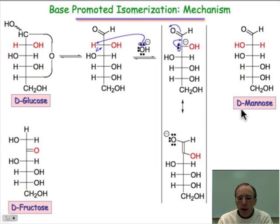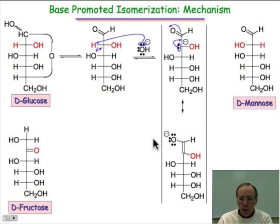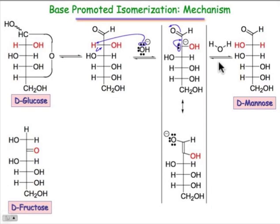What happens in forming D-mannose is that we simply reprotonate at that alpha carbon position — the carbanion — but we reprotonate from the opposite side. So it's like any other sp3 carbanion. It can undergo inversion of configuration rapidly, pyramidal inversion like we saw with nitrogen early on in the semester. So if water serves as the acid to protonate that carbanion, we can end up with the C2 epimer D-mannose.